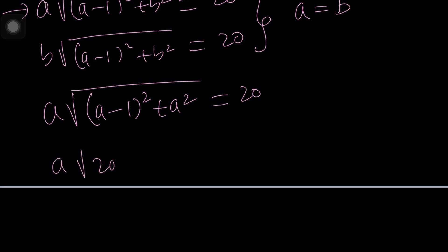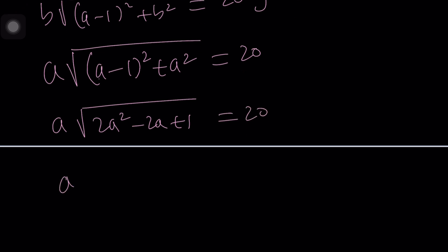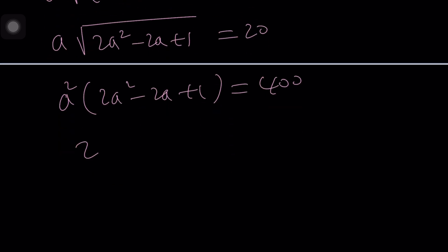This gives me a² + a² - 2a + 1 equals 20. We can square both sides and that gives 400. When you distribute this gives 2a⁴ - 2a³ + a² - 400 = 0. From here we're supposed to solve for a and then for b.